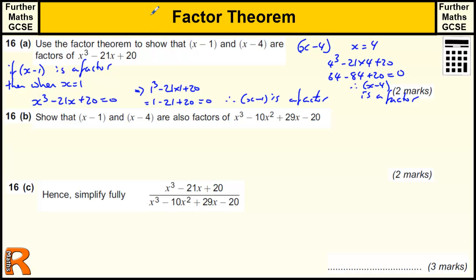Okay, so for the factor theorem, we just need to show that whatever value makes this bracket 0, that number, when put into the equation, gives us 0. So similarly for this, we've got to show these are factors for this. So when x equals 1, we have 1 cubed minus 10 times 1 squared plus 29 times 1 minus 20. So that's 1 minus 10 plus 29 minus 20, which equals 0.